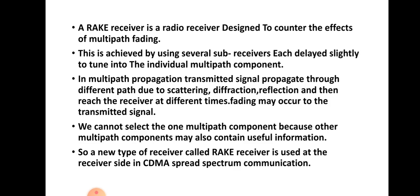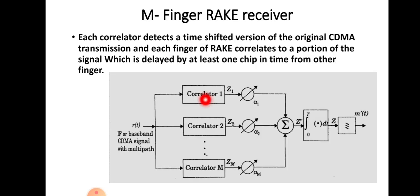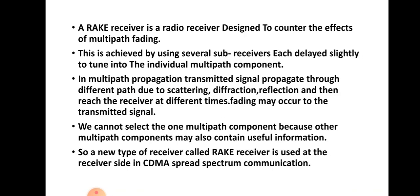In the case of rake receivers, the multipath fading effect is eliminated by using several sub-receivers, or sub-correlators. Each of these sub-receivers is delayed slightly to tune into the individual multipath components. This is the block diagram showing the receiver section. The received signal is given to all sub-receivers. When a signal is transmitted from transmitter to receiver and undergoes multipath propagation, each of the multipath signals may be delayed by different amounts.